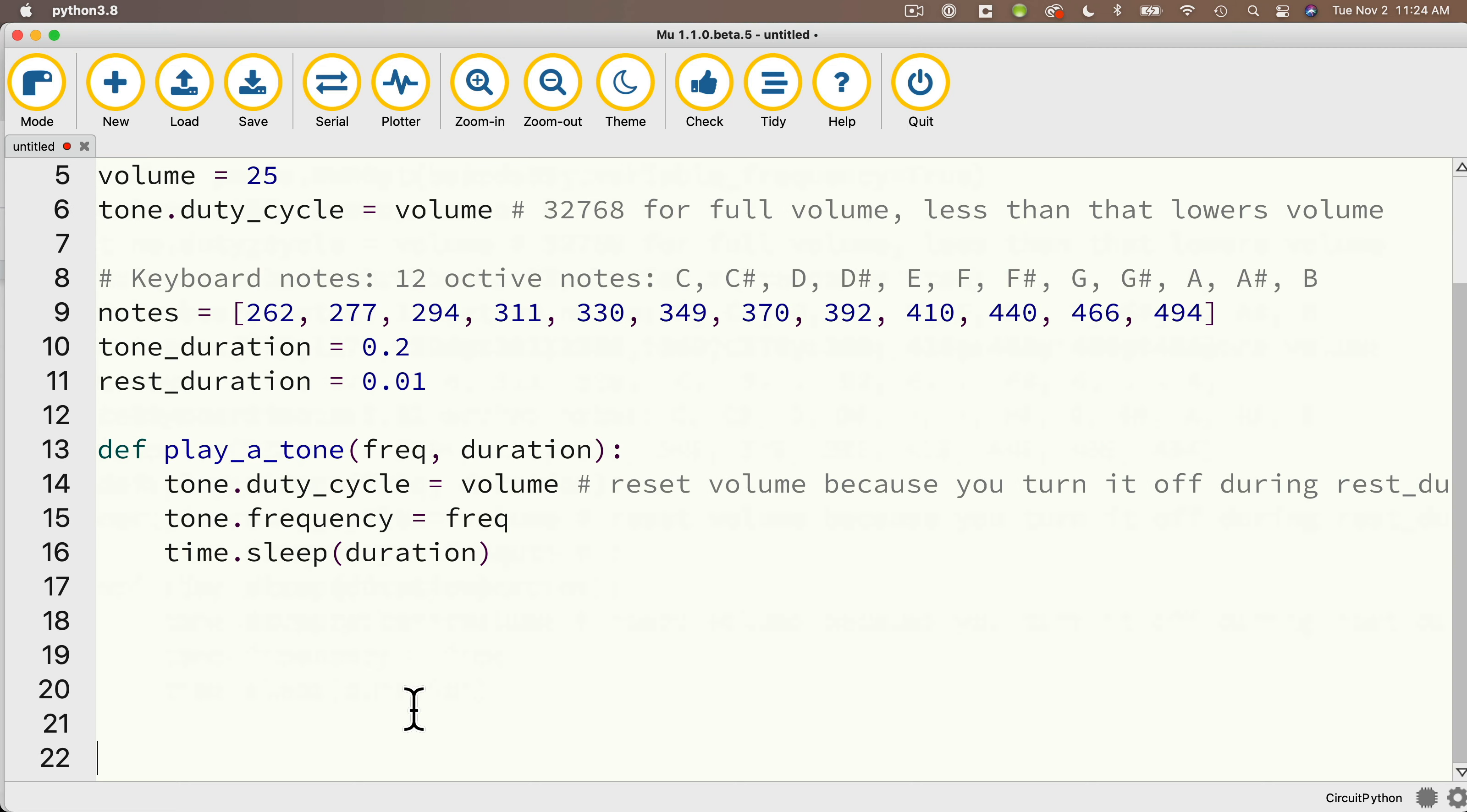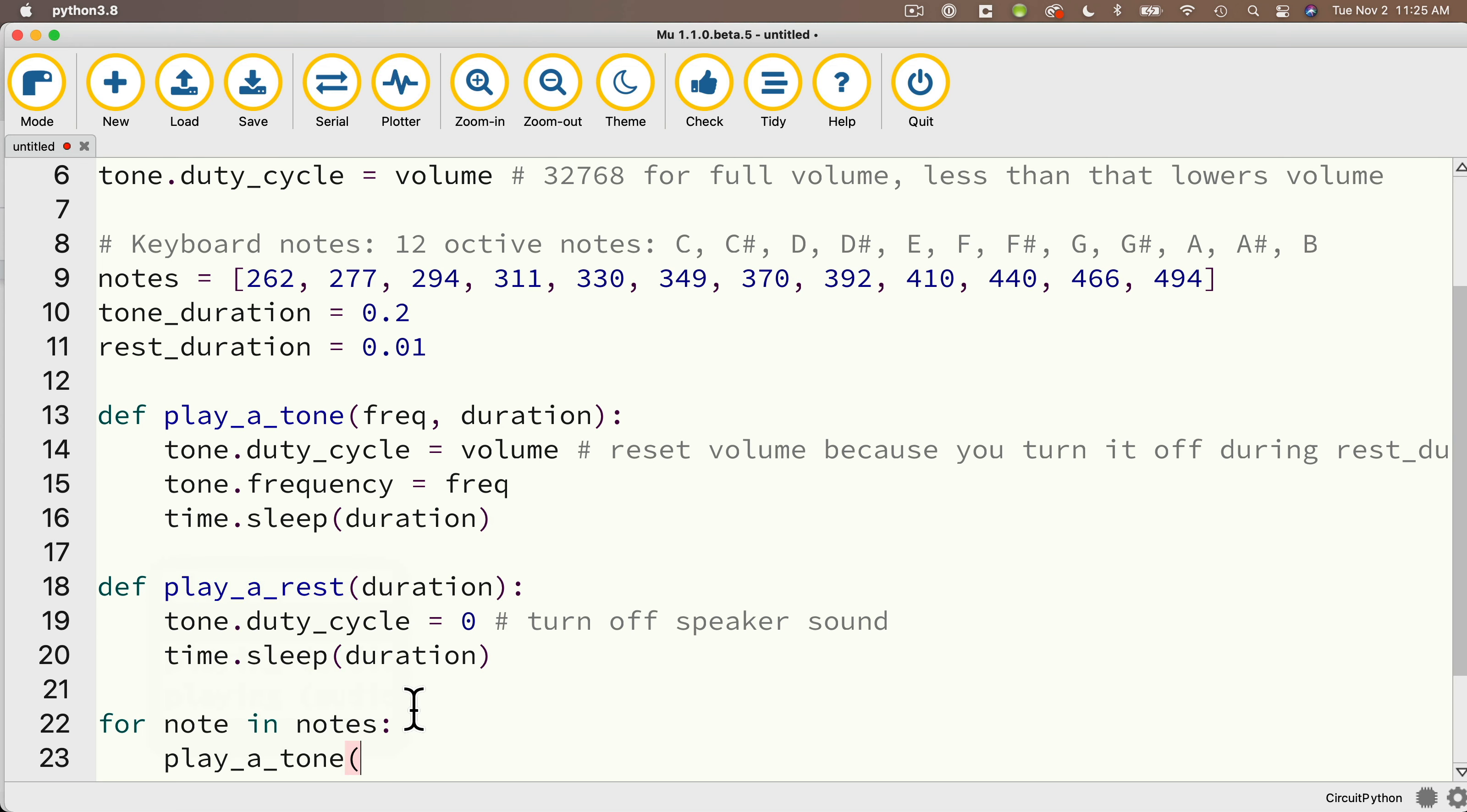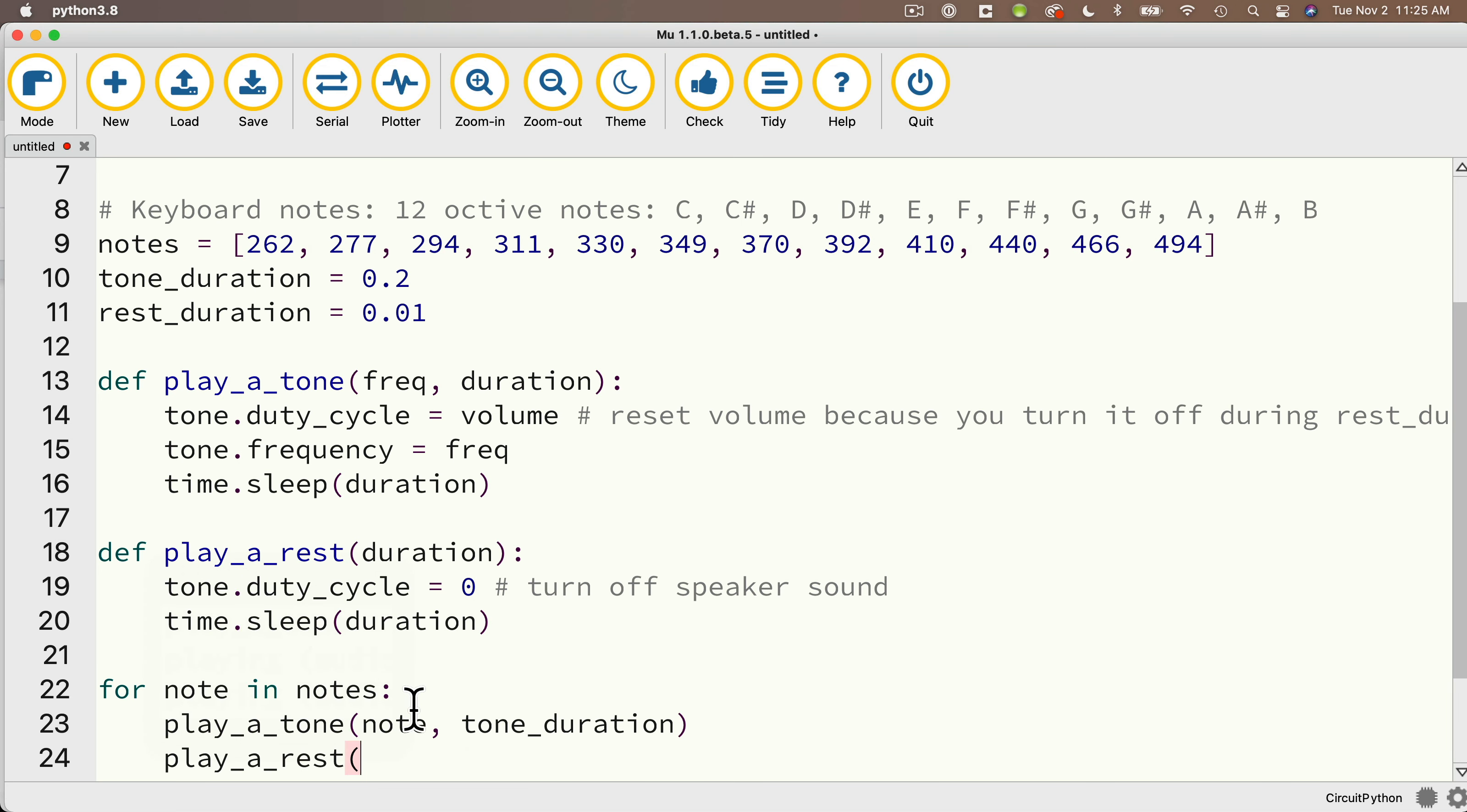Then below this, we're going to create our function to play a rest. We'll define it, DEF, as play_a_rest. We're going to pass in between parentheses duration. Make sure you put the colon at the end. First, we'll turn off our speaker with tone.duty_cycle, setting that equal to 0. Then we'll set time.sleep to in parentheses duration. So that's going to give us a rest for that particular duration. Then below, we're just going to iterate through all of the notes in the notes list. Remember our technique: for note in notes, colon, we're going to play_a_tone, passing in note, comma, tone_duration. And then we're going to play a rest, passing in rest duration.